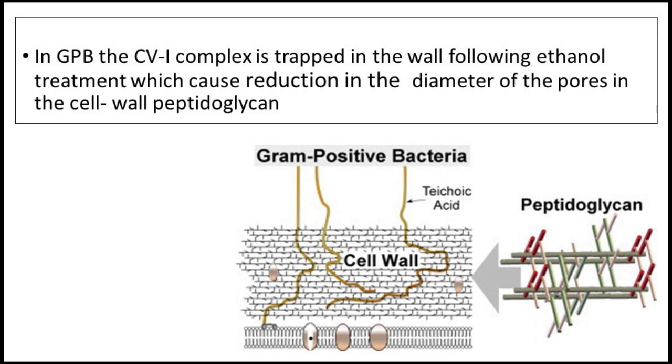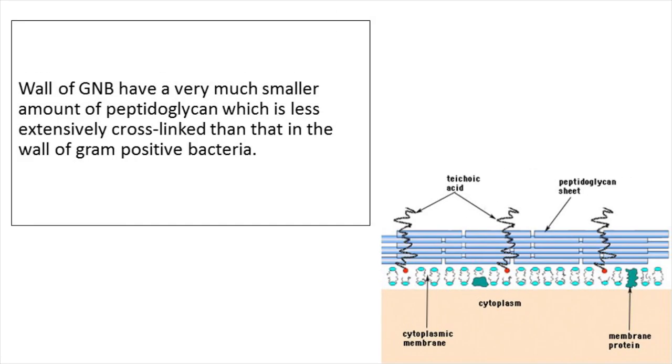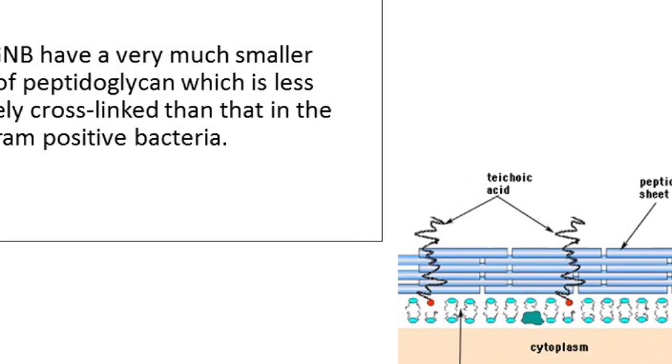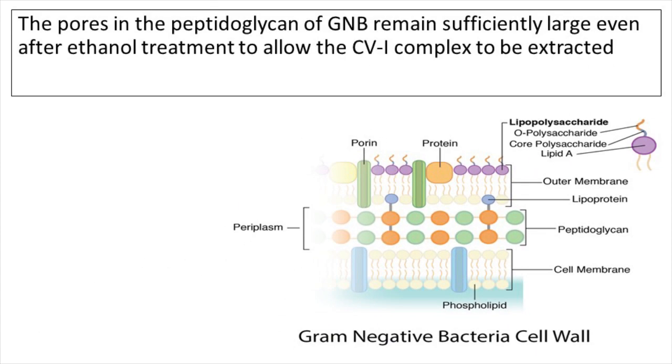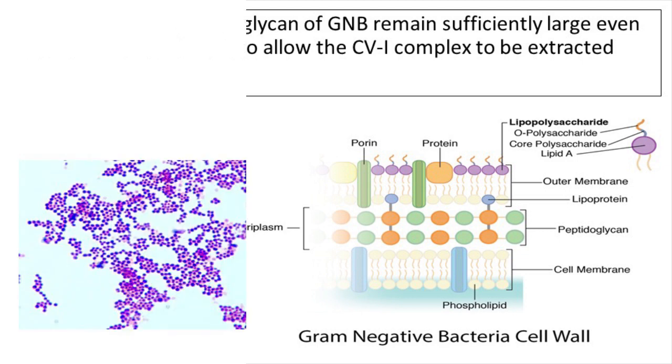Ethanol treatment causes a diminution in the diameter of the pores in the cell wall peptidoglycan. The wall of Gram negative bacteria has a much smaller amount of peptidoglycan which is less extensively cross-linked than that in the wall of Gram positive bacteria. The pores in the peptidoglycan of Gram negative bacteria remain sufficiently large even after ethanol treatment to allow the crystal violet-iodine complex to be extracted. These two explanations are not mutually exclusive and it is likely that both contribute to the mechanism of the Gram stain.